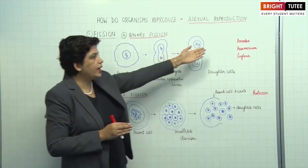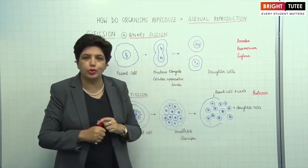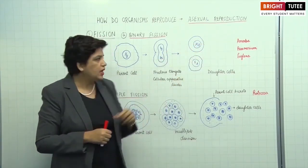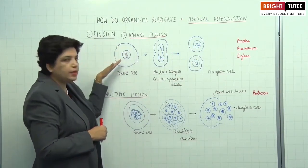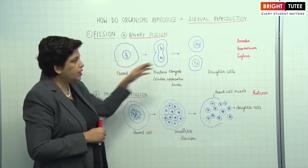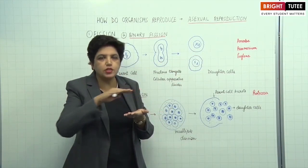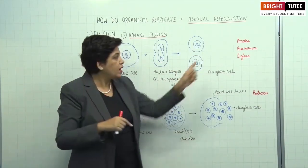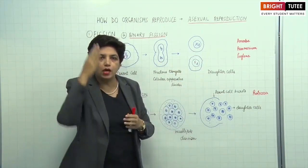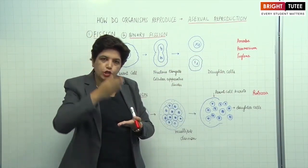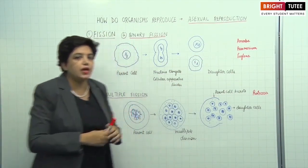Binary fission occurs in organisms like amoeba, paramecium and euglena. The amoeba does not have a fixed shape, so the division can occur in any plane. In paramecium, the cell division occurs in the transverse plane. While in euglena, which has a whip-like flagella, the division occurs in the vertical plane only.